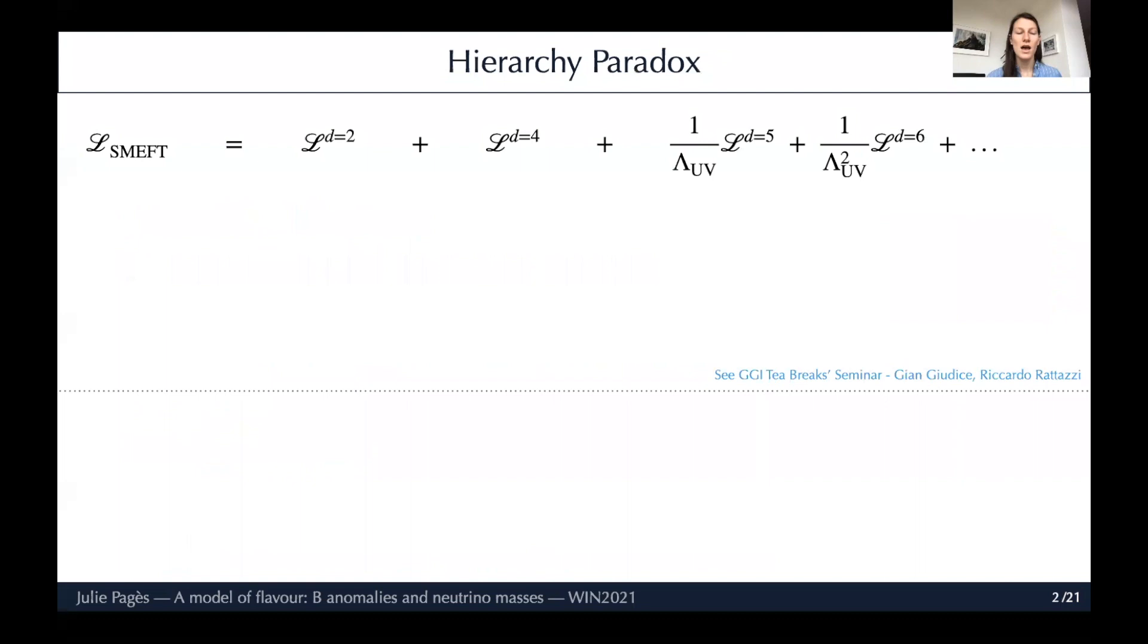I want to start this talk by picking up on a very inspiring GGI Tea Break seminar given about a week ago by Gian Giudice and Riccardo Rattazzi on naturalness and the future of high energy physics. They gave a very clear picture of what's the hierarchy paradox. If you consider this Lagrangian, you have dimension two and dimension four operators that are just the renormalizable standard model, and then you can put higher dimensional operators in order to parameterize the new physics.